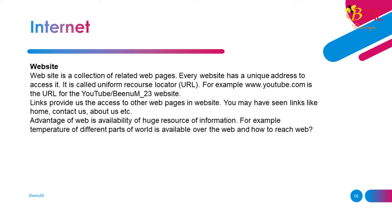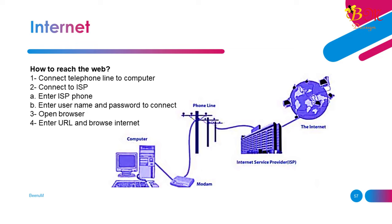Links provide access to other webpages and websites. You may have seen links like Home, Contact Us, About Us, etc. An advantage of the web is the availability of a huge resource of information — for example, temperatures of different parts of the world are available on the web. How to reach the web: 1. Connect telephone line to computer. 2. Connect to ISP — enter ISP phone number, then enter username and password to connect. 3. Open browser. 4. Enter URL and browse the internet.